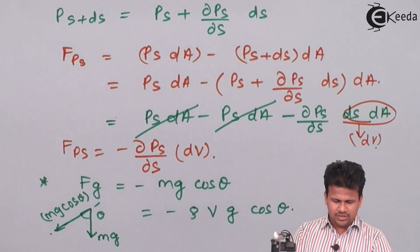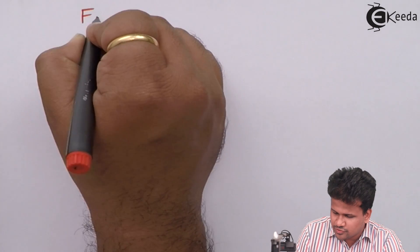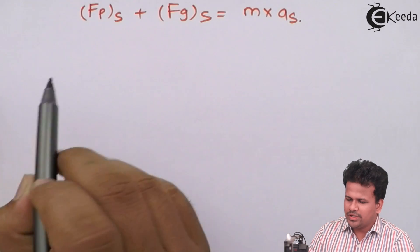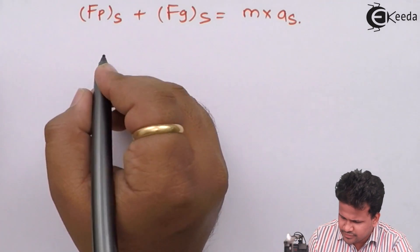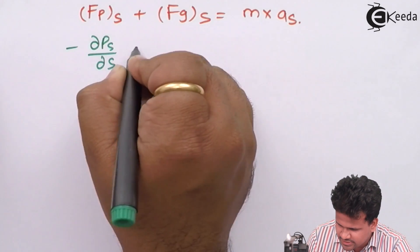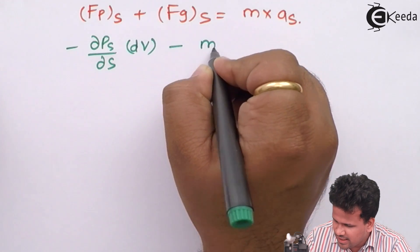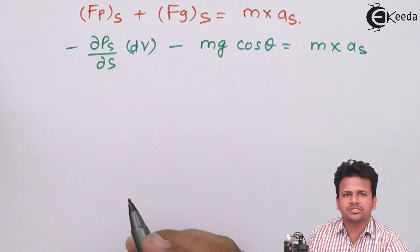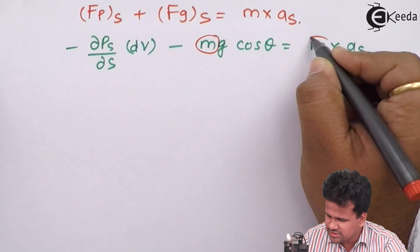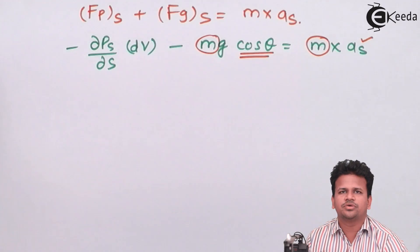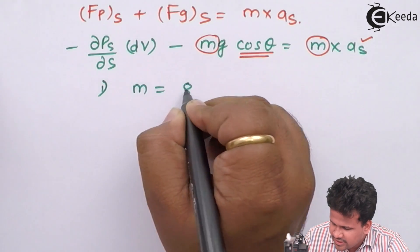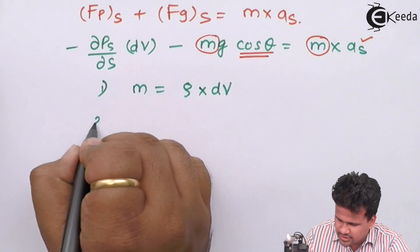Now let us write all these equations together in Euler's equation. Euler's equation of motion states that force due to pressure plus force due to gravity equals mass into acceleration in a particular direction. Substituting: minus ∂P_S/∂S · dV minus M·G·cos(θ) equals mass into acceleration along S direction. We are going to substitute three terms: the mass, cos(θ), and the acceleration along S.